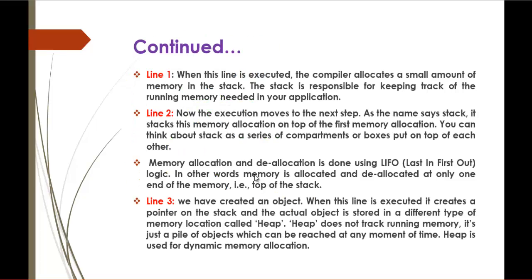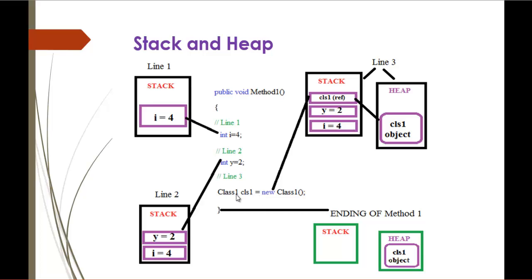Now to understand it clearly, we have created an object. When this line is executed, it creates a pointer onto the stack, and the actual object is stored in a different memory allocation called heap. This is line 3. Now when I initialize this, it allocates memory but stores the pointer to the stack while the actual object will be stored in the heap. This is how the heap works.